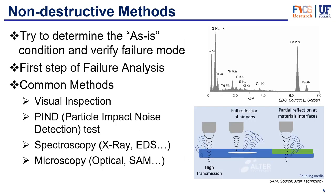There are testing methods to first find which failure mode occurred, and then to determine the root cause. Once you acknowledge that the package has failed, you start with non-destructive methods. The reason is obvious — if you destroy the package first, you may not be able to perform non-destructive tests afterward. A key component is determining the as-is condition and verifying the failure mode, knowing what failed and seeing exactly what the package looked like when it failed — sometimes to try to replicate it for more information. Non-destructive methods are always the first step of failure analysis.